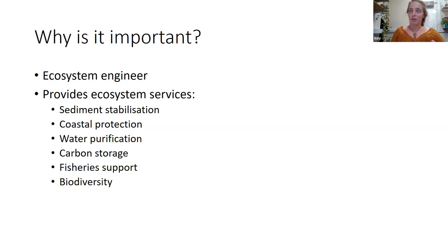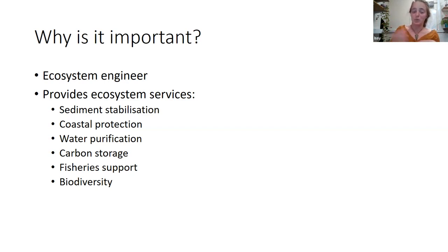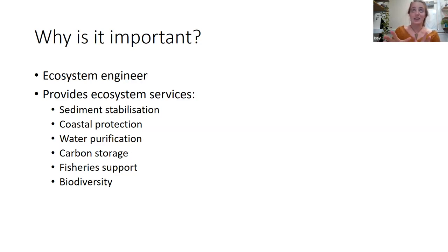Seagrass stabilizes sediment through its roots and rhizomes; it protects coastlines as the leaves buffer wave action, reducing wave energy. It can purify water by absorbing nutrients and trapping sediment, improving water clarity. It's also a pretty good carbon store, though I urge some caution — there's a slightly misleading figure suggesting seagrass can store carbon up to 35 times faster than tropical rainforest, but that conflates different things. Nonetheless, seagrass is an important carbon store.